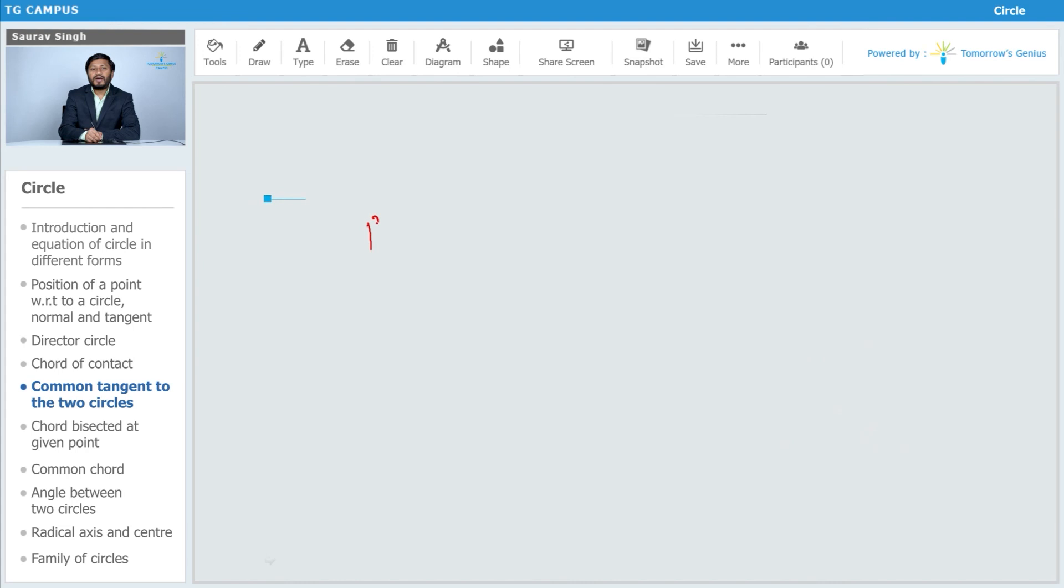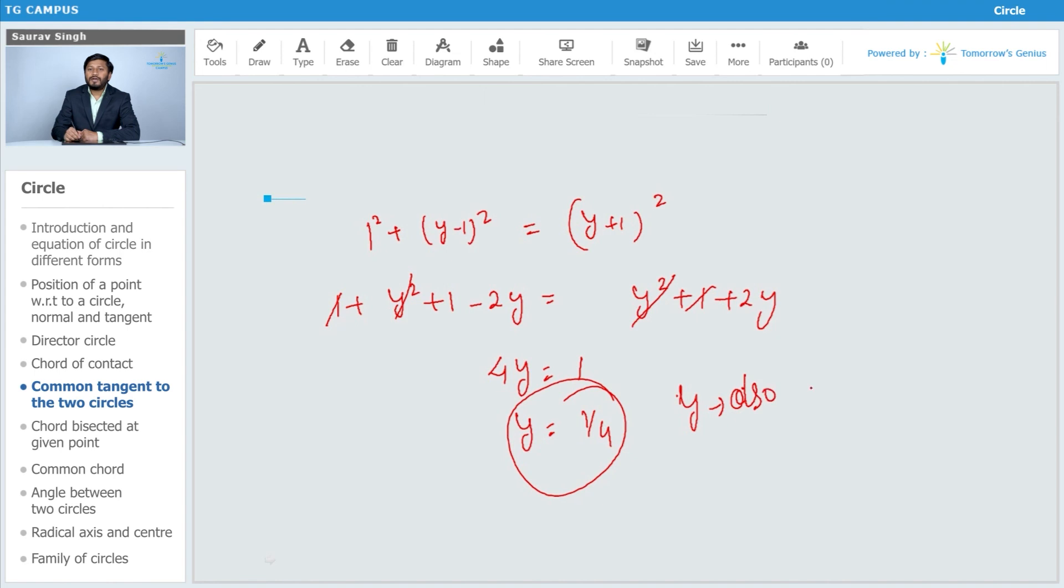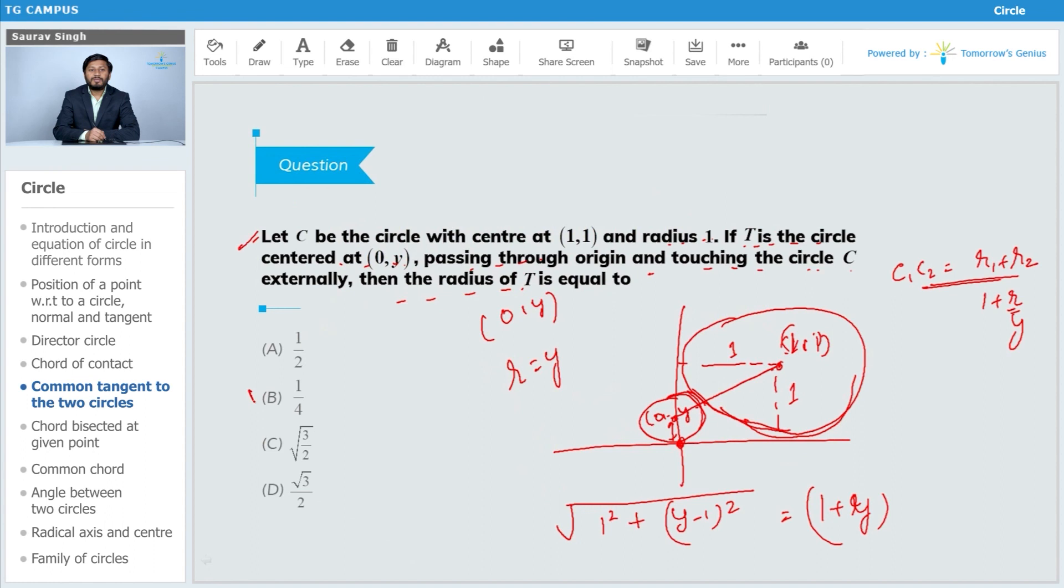1 plus 1 minus 2y is equal to y square plus 1 plus 2y. So y square will get canceled out, 1 will get canceled out. So from here, 4y is equal to 1, so y is equal to 1 by 4. And here y is our radius also. So radius r of the given circle is 1 upon 4. So option B is the correct answer.